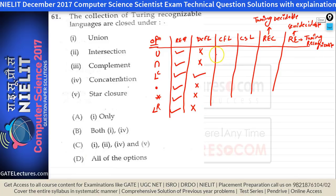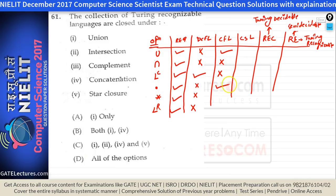CFLs are closed under union but not closed under intersection. They are not closed under complementation — this is the key difference between DCFL and CFL. DCFLs are closed under complementation but CFLs are not. CFLs are closed under concatenation, Kleene closure, and reversal.